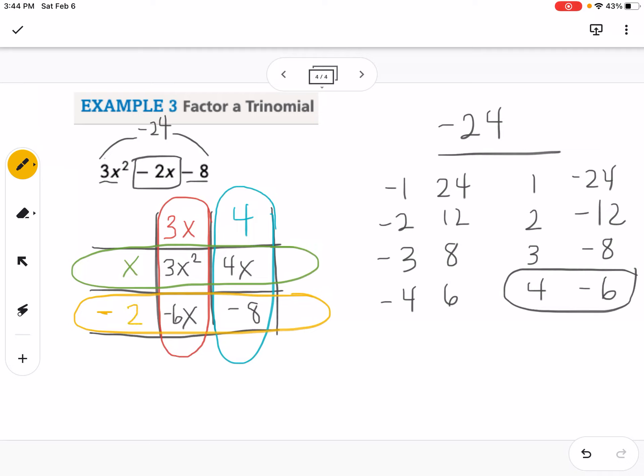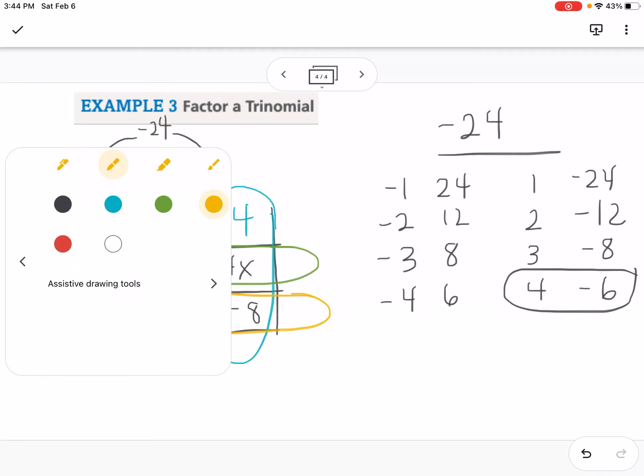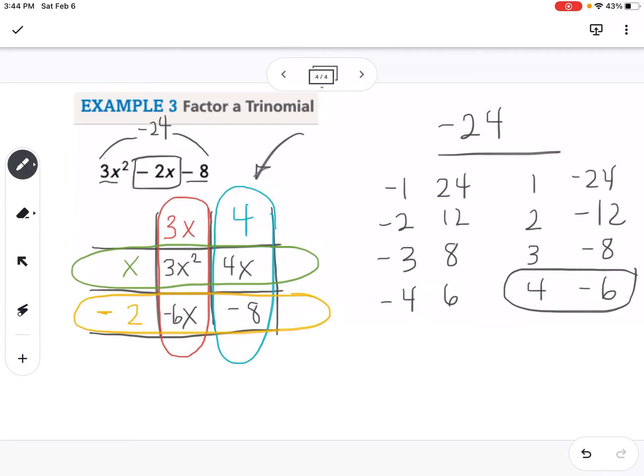So then I'm just going to write down my factors. So from the top here, I have 3x plus 4. And from the side, I have x minus 2. So either way works to find the factors of a trinomial that has a leading coefficient that is greater than 1. So it's up to you to decide which method you would like to use to factor. Let me know if you have any questions.